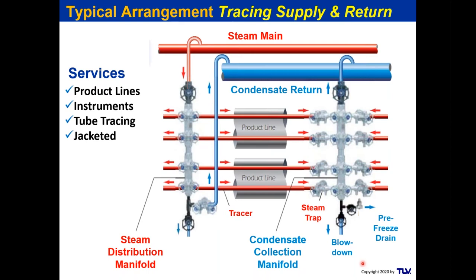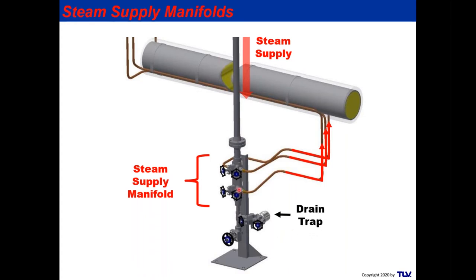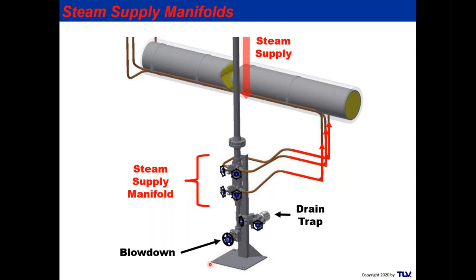Looking more closely at the steam supply manifold: steam comes off the main header down to a supply distribution manifold feeding individual tracing circuits. Since steam will be condensing in the manifold — similar to a drip application — we need a drip trap here to remove condensate so it doesn't back up into the tracing system. A blowdown is also included so that any dirt and debris captured in the assembly can be cleared frequently.